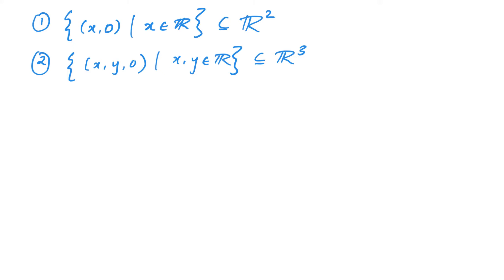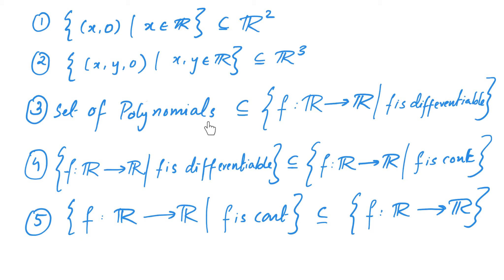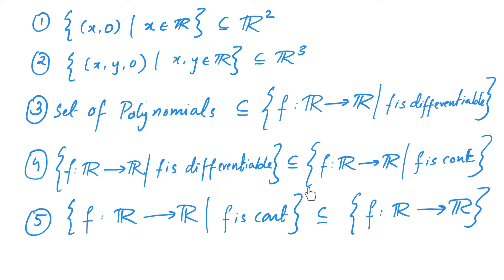Now recall a more sophisticated class of examples. Notice that the set of polynomials is a subset of the set of all differentiable functions, because polynomials are differentiable. Similarly, as differentiable functions are continuous, the set of all differentiable functions is a subset of the set of all continuous functions, and the set of all continuous functions is a subset of the set of all functions. However, we already saw that the set of continuous functions, the set of differentiable functions, and the set of all polynomials are all vector spaces under the addition and scalar multiplication of functions. Thus, the set of polynomials is a subspace of the set of all differentiable functions, the set of all continuous functions, and the set of all functions. Similarly, the set of all differentiable functions is a subspace of the set of all continuous functions.